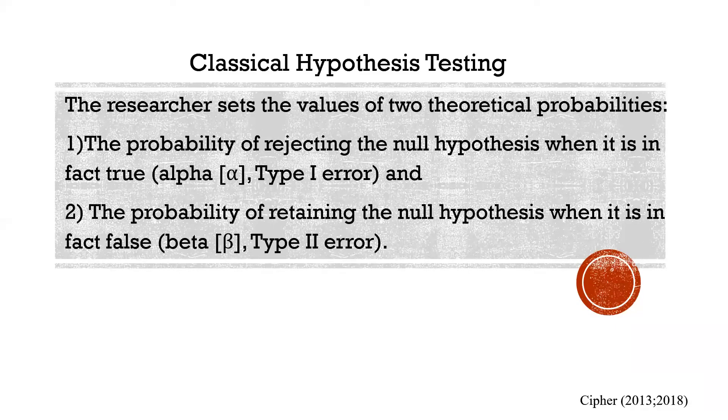Also, a part of classical hypothesis testing is the stating of two theoretical probabilities of errors. One error is type 1 error, which is the probability of rejecting the null when, in fact, it is true. In other words, of stating that there is a difference or there is an association and being wrong.